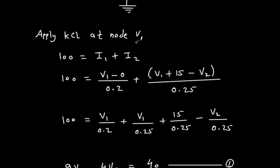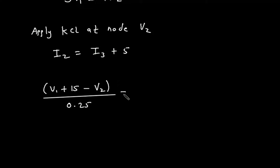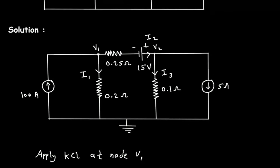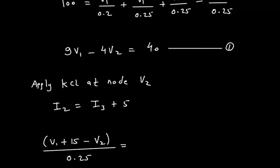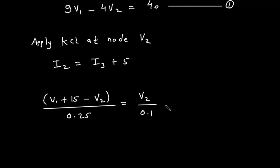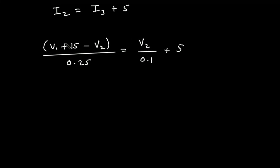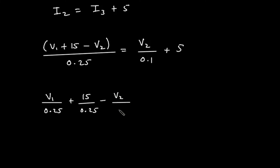The I2 value is the same as before: V1 by 0.25, plus 15 by 0.25, minus V2 by 0.25. And I3 is V2 minus 0 divided by 0.1. Moving the V2 terms to the left side gives: V1 by 0.25, plus 15 by 0.25, minus V2 by 0.25, minus V2 by 0.1, equals 5.